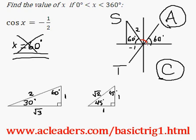So all we need to do is to find this standard position angle here, which would be just 60 degrees taken away from 180. So 180 minus 60 equals 120. So x is 120. That's one answer.